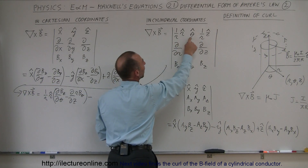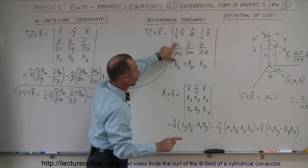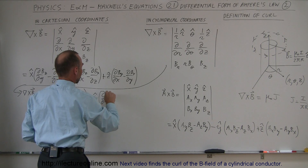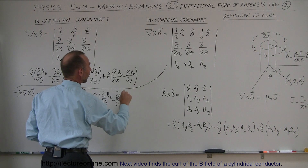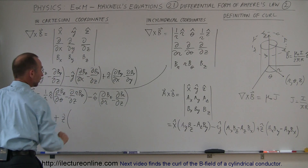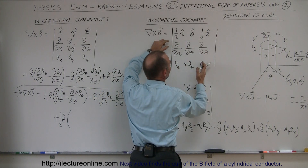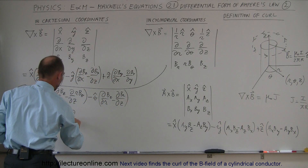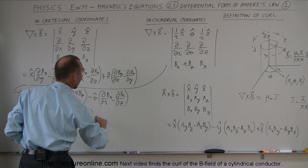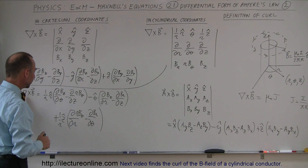Then you go minus, because the signs always alternate plus, minus, plus. So minus the theta unit vector times (the partial derivative with respect to r of B sub-z minus the partial derivative with respect to z of B sub-r). And finally, plus 1 over r times the z unit vector times (the partial with respect to r of r times B sub-theta, minus the partial with respect to theta of B sub-r). That is the curl of the B vector — the magnetic field vector — in cylindrical coordinates.